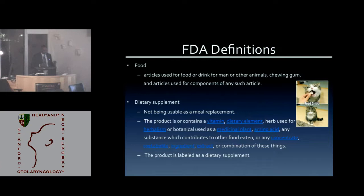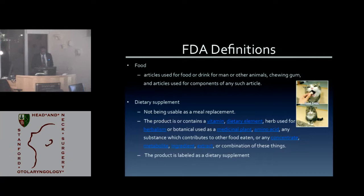A lot of these things are kind of vague, but this is how the FDA looks at what things are. Food is articles used as food or drink for man or animals, including chewing gum. Dietary supplements are labeled as a dietary supplement, do not replace a meal, and are made up of vitamins, dietary elements, herbs, amino acids, and electrolytes. These definitions are important to understand later.